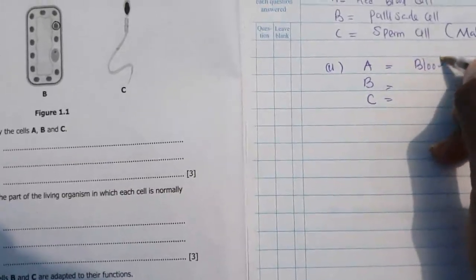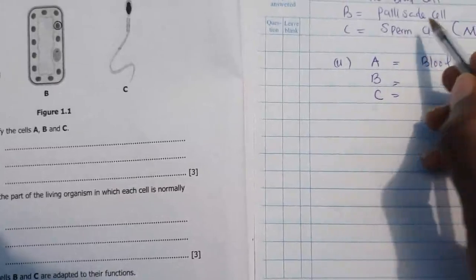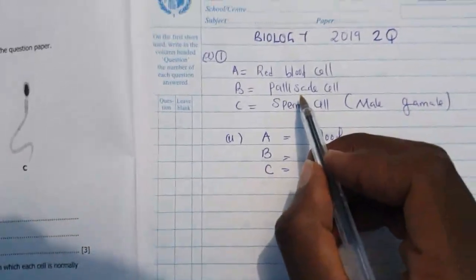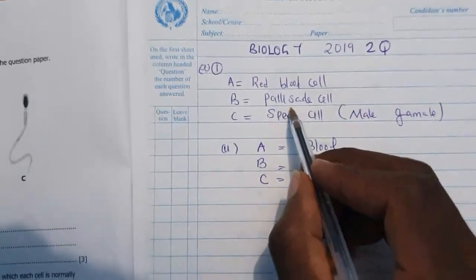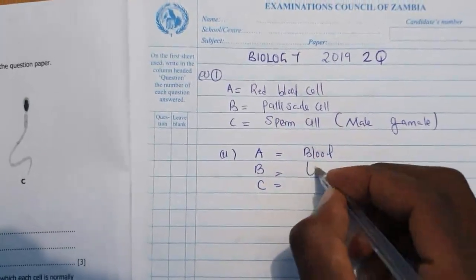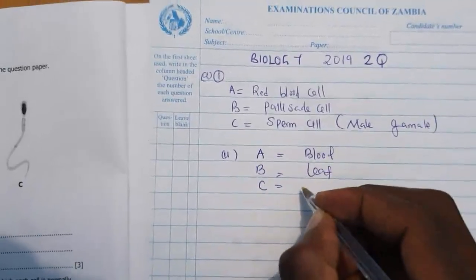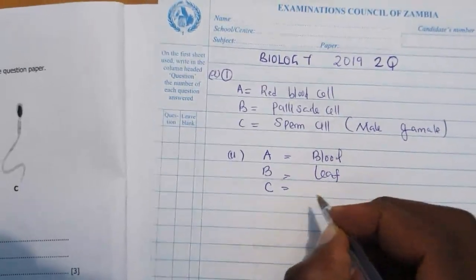Then cell B, the palisade cell, where can we find cell B? Where can we find it? We can find it in the leaf. Then cell C, where can we find it? In the testes.